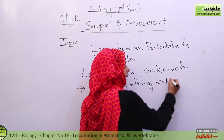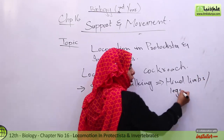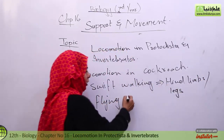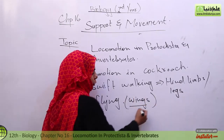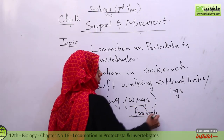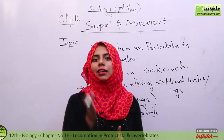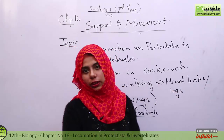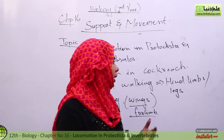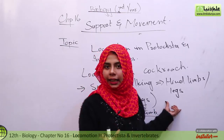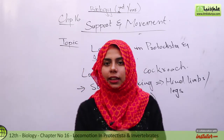Which limbs are involved in walking? The legs are involved. And which are modified into wings? They are used for flying. If we talk about walking, on one side of the cockroach, the legs are used in sequence: the front leg moves first, then the middle leg, and then the hind leg. Similarly, the other side of the legs are used.